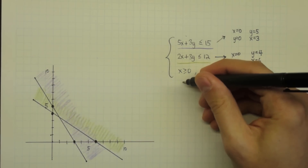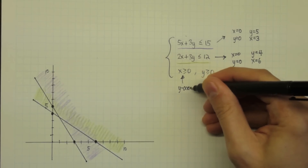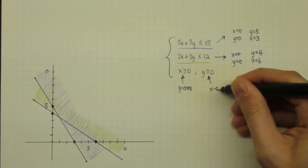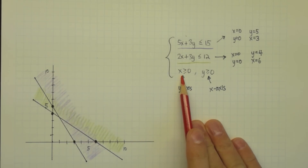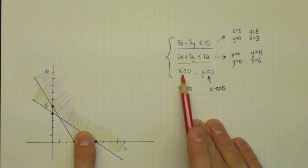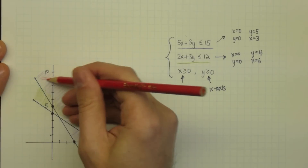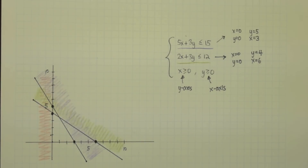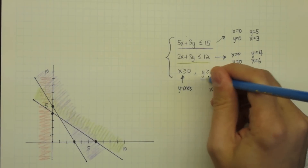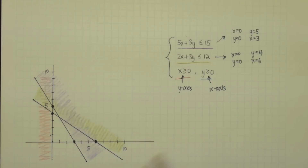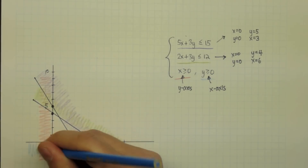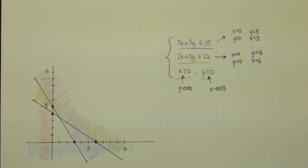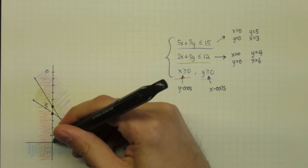The last two inequalities deal with the y-axis and the x-axis. X greater than or equal to 0 means we're looking at all points on the positive x-axis side, so we cross off everything to the left of the y-axis — everywhere x would be negative. Similarly, y greater than or equal to 0 means we cross off everything below the x-axis. Any point not crossed off now is the feasible set.